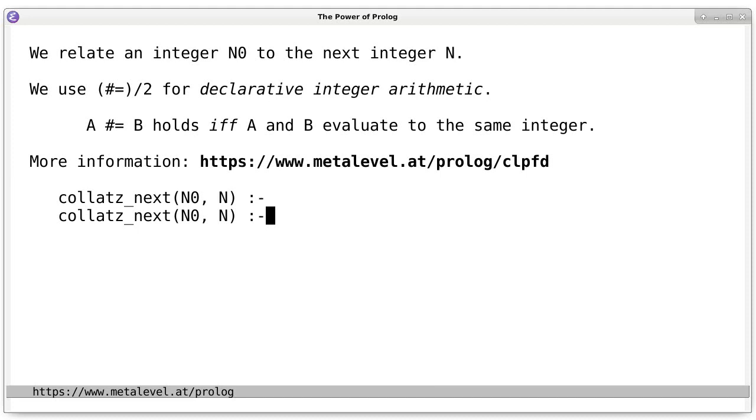First, what about if n0 is even? What does it mean if n0 is even? This means that n0 is equal to 2 times some integer k. And what must hold in this case? In this case, the next integer n is just this integer k. Because clearly, if n0 is 2 times k, then k is n0 divided by 2. And we said that if n0 is even, then the next integer is n0 divided by 2, which is just this k.